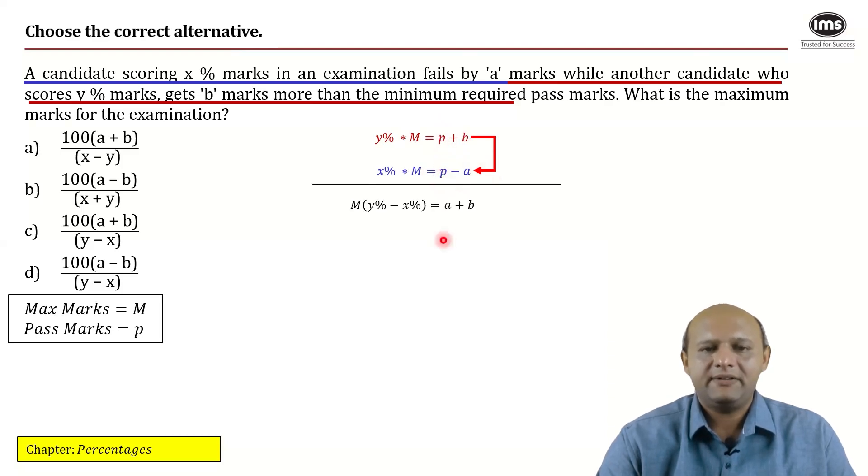So here you have the next step which is M taken out common. You have Y percent minus X percent equal to A plus B. Transferring this to the denominator, you have M equal to A plus B upon Y minus X percent.